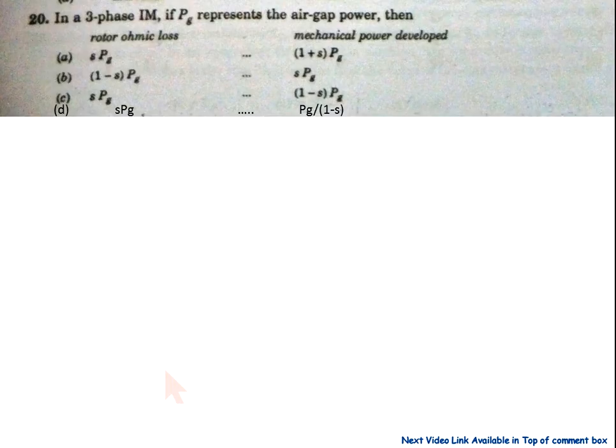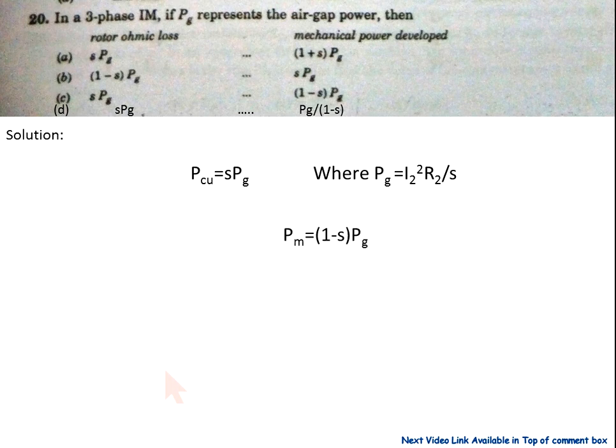Question 20: in the three-phase induction machine, if Pg represents air gap power, then rotor ohmic losses = s × Pg, where Pg = I2² × R2 / s, and mechanical power developed Pm = (1 - s) × Pg. So option C is correct.